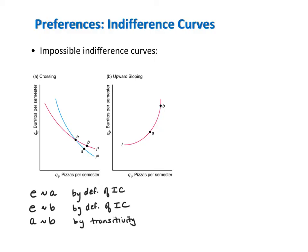However, when we look at B versus A, bundle B has more pizza and more burritos than bundle A. So by non-satiation or monotonicity, B should strictly be preferred to A. Herein lies the contradiction: we can't simultaneously rank A as indifferent to B and B as strictly preferred to A. That is why indifference curves can't cross each other.